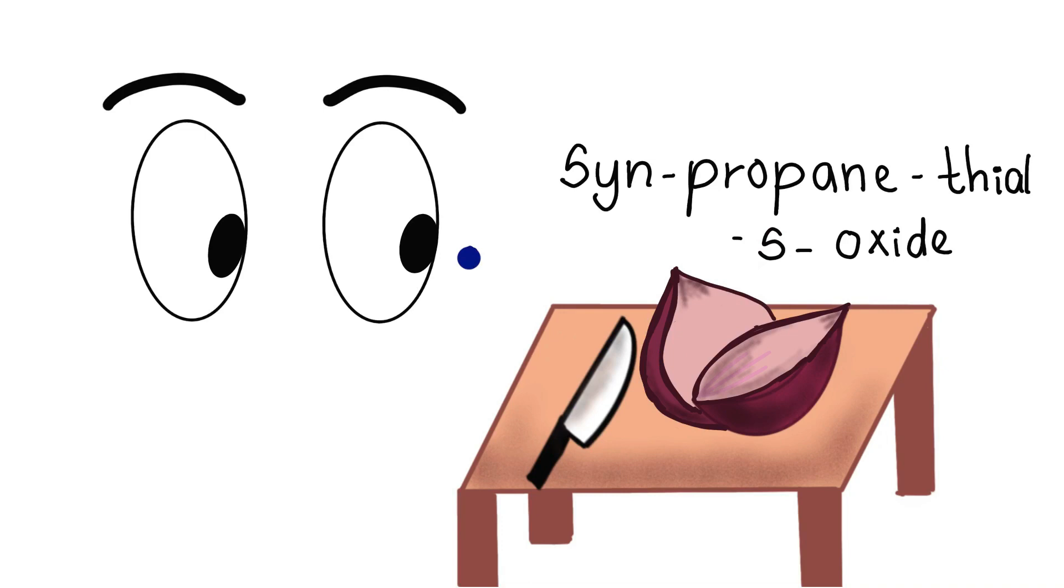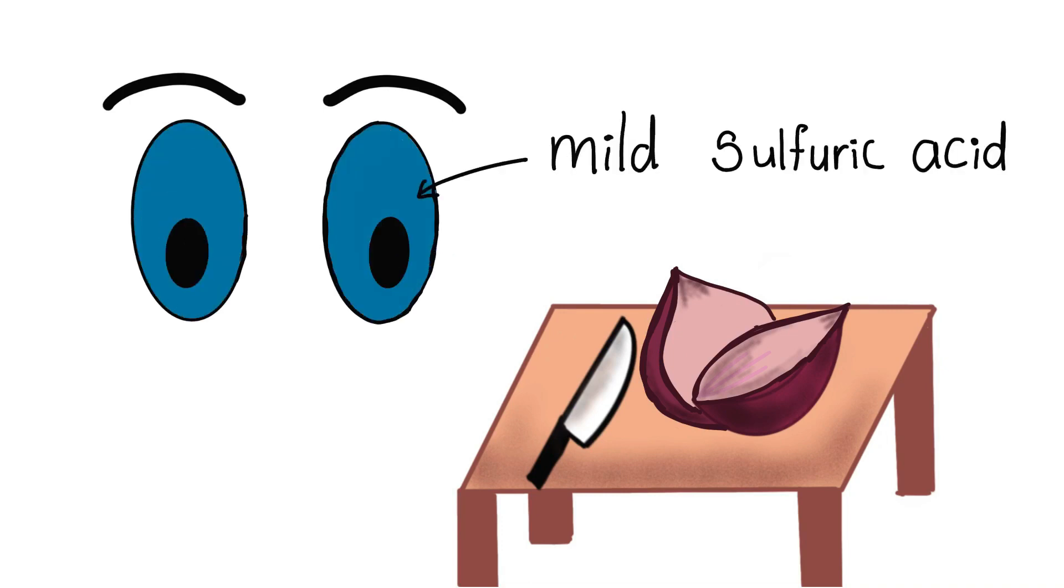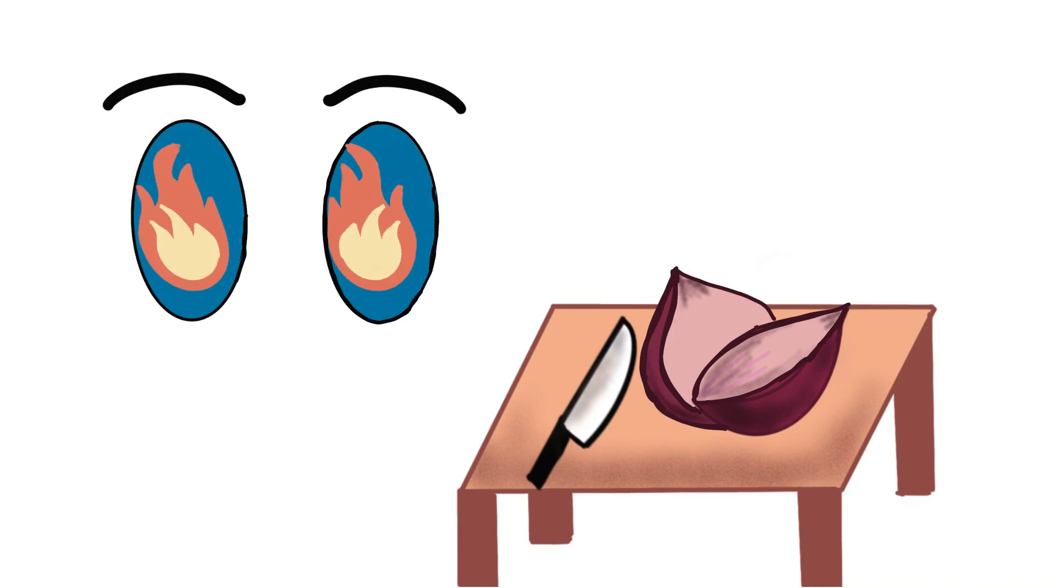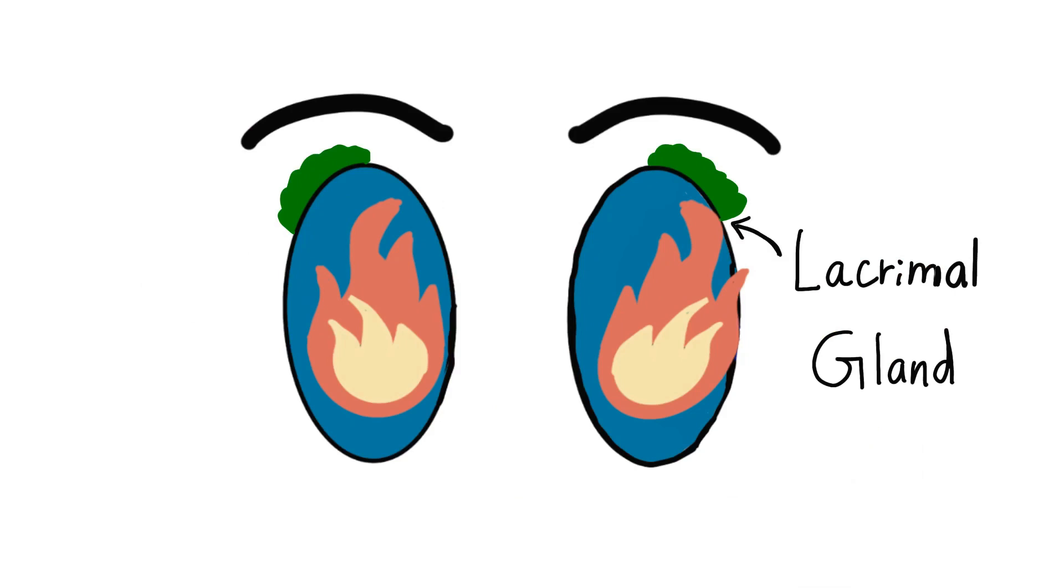When this gas contacts with eyes, it reacts with the substances that keep our eyes lubricated and forms mild sulfuric acid. This causes a burning sensation to the eye. In order to wash it out, the lacrimal gland produces disinfecting liquid.